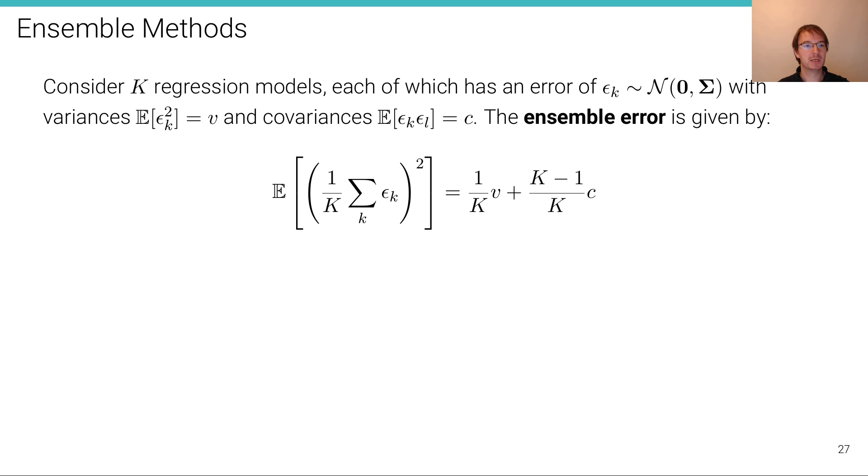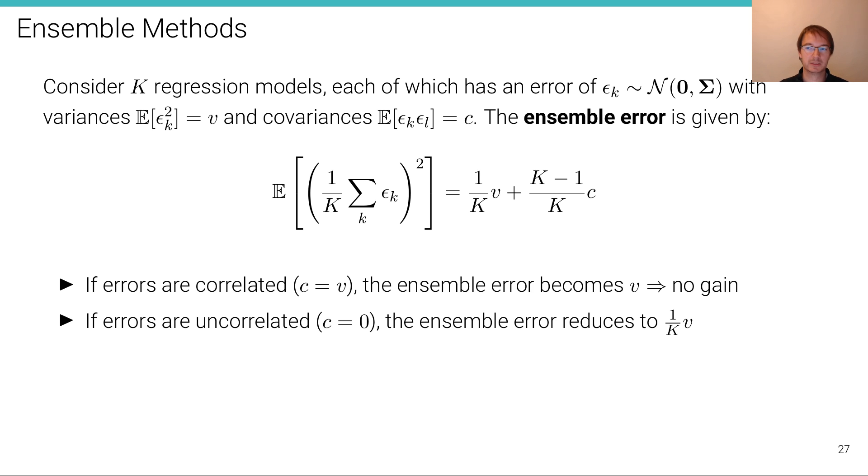What does this mean? So this is again the same equation from the previous slide. The ensemble error is given by one over k the variance plus k minus one over k times the covariance. Well, if the errors are correlated, if they are maximally correlated, which means that the correlation is equal to the variance, c equals v, then the ensemble error becomes v. Because if we have v here, then we have one minus one plus k, so k over k is one, so we end up with v. And there's basically no gain. v is the variance of one of these individual models, so we haven't gained anything.